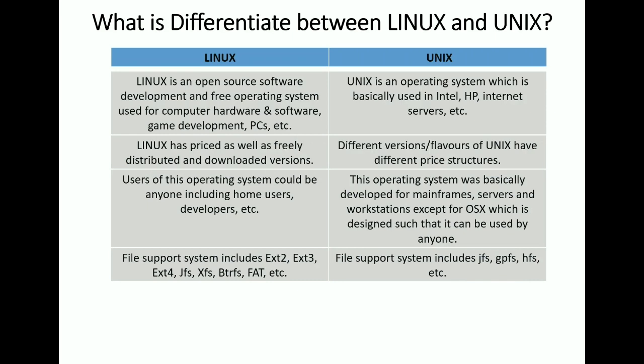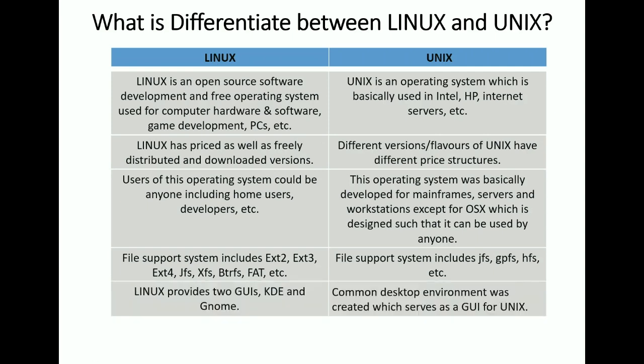For file system support, Linux supports ext2, ext3, ext4, GFS, XFS, Btrfs, and FAT, among others. Unix supports file systems such as GFS, GPFS, and HFS. Both operating systems support different sets of file systems.